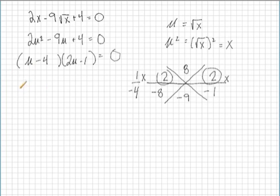We've now factored in terms of u. Let's go ahead and solve these factors. So u minus 4 equals 0 means u equals 4. 2u minus 1 equals 0 means of course u equals 1 half. So we've solved in terms of u,